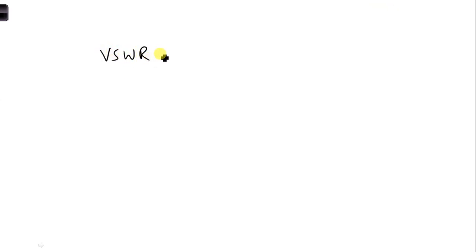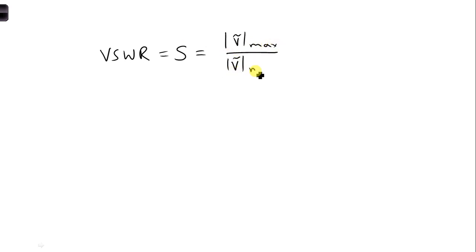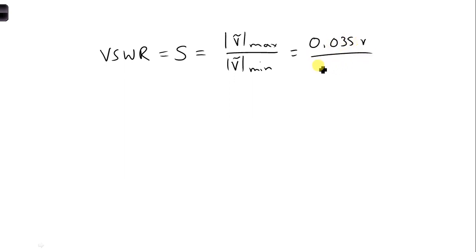The VSWR — here we're going to use S for short — is the ratio of Vmax over Vmin. Both of these values are given, so the maximum, I'll write in terms of volts: 0.035 over the Vmin, which is given as 0.014 volts.